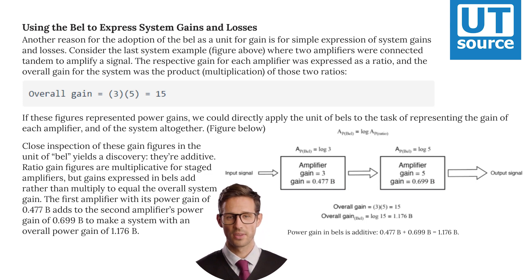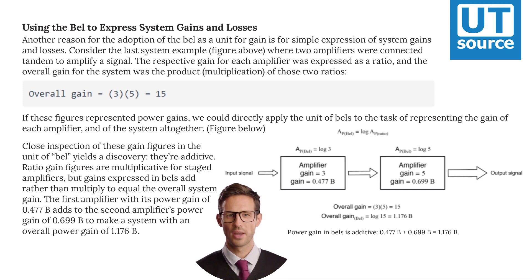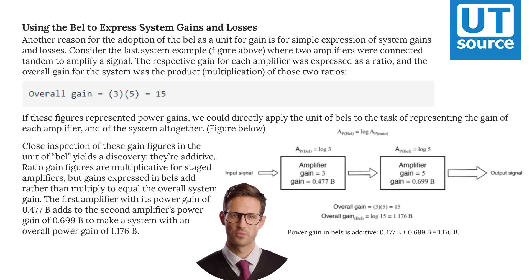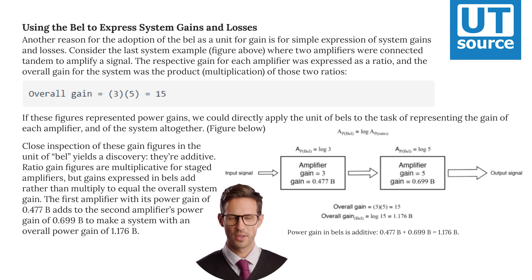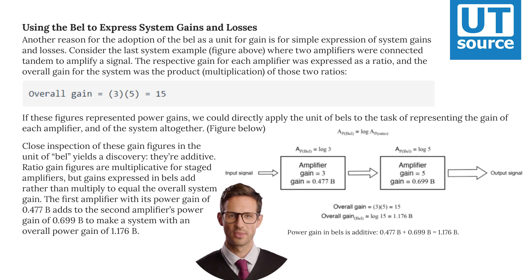Close inspection of these gain figures in the unit of bell yields a discovery: they're additive. Ratio gain figures are multiplicative for stage amplifiers, but gains expressed in bells add rather than multiply to equal the overall system gain. The first amplifier with its power gain of 0.477 B adds to the second amplifier's power gain of 0.699 B to make a system with an overall power gain of 1.176 B.